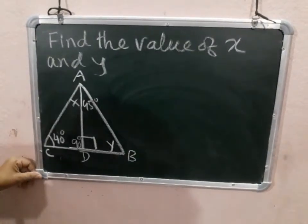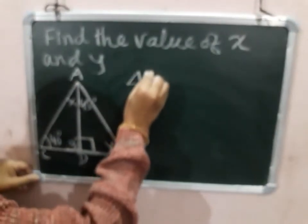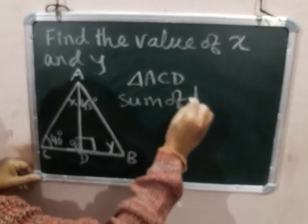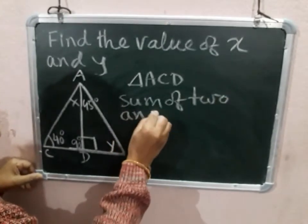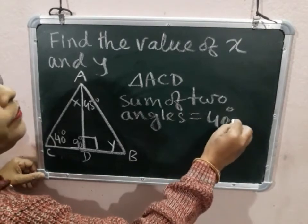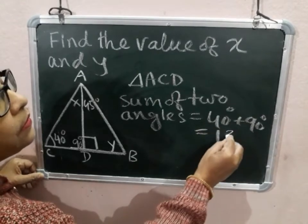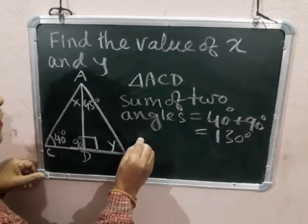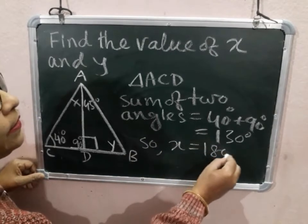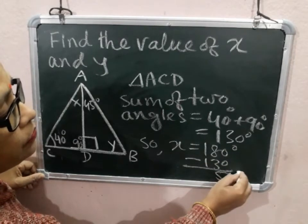In triangle ACD, the sum of the two known angles: 40 degrees plus 90 degrees equals 130 degrees. So X equals 180 degrees minus 130 degrees, which equals 50 degrees.